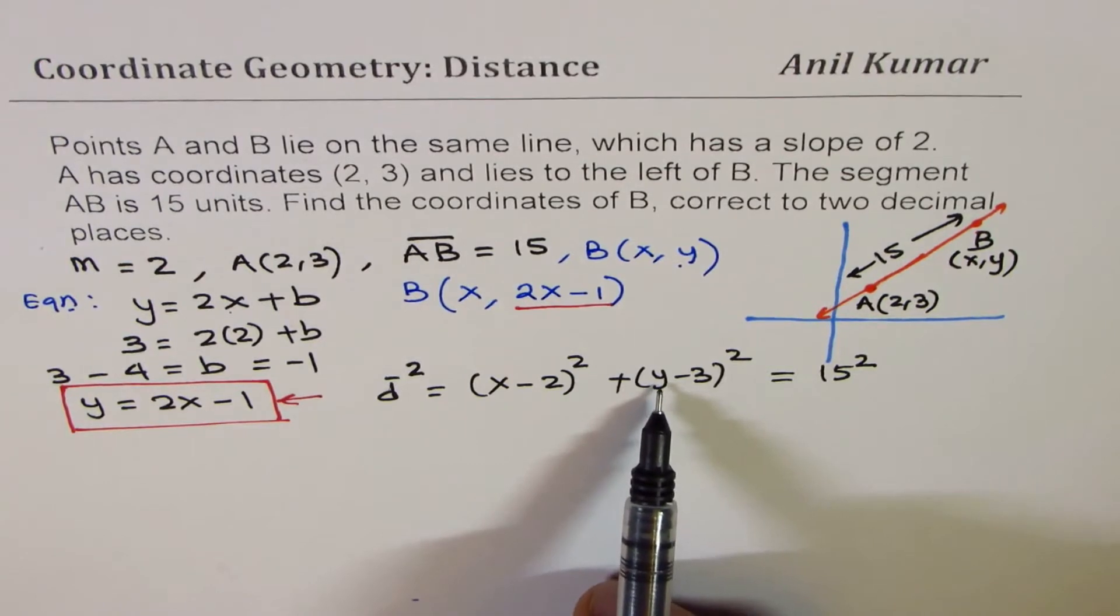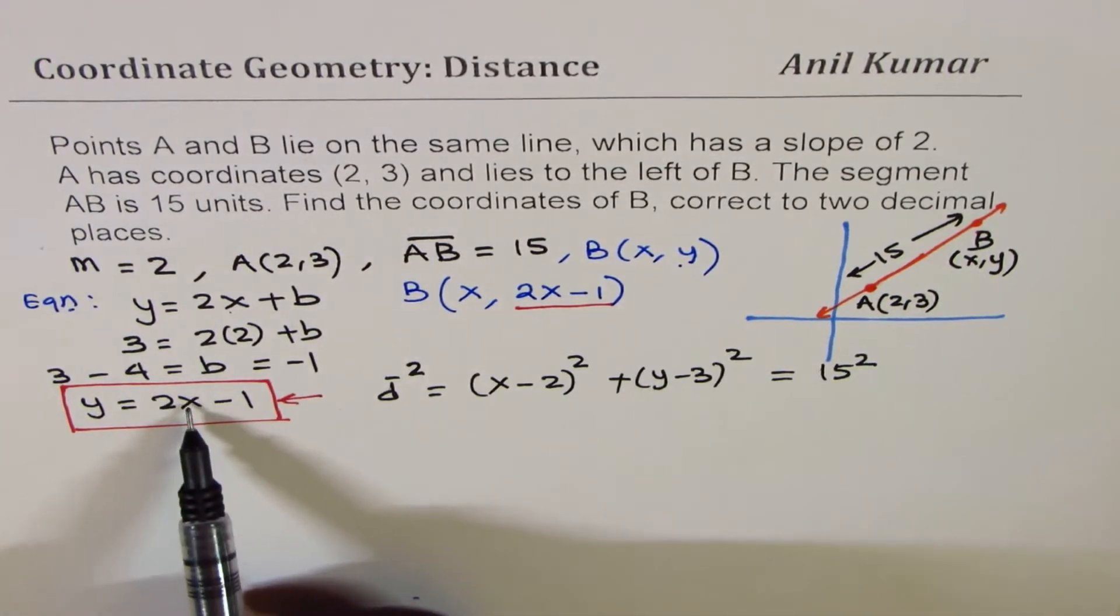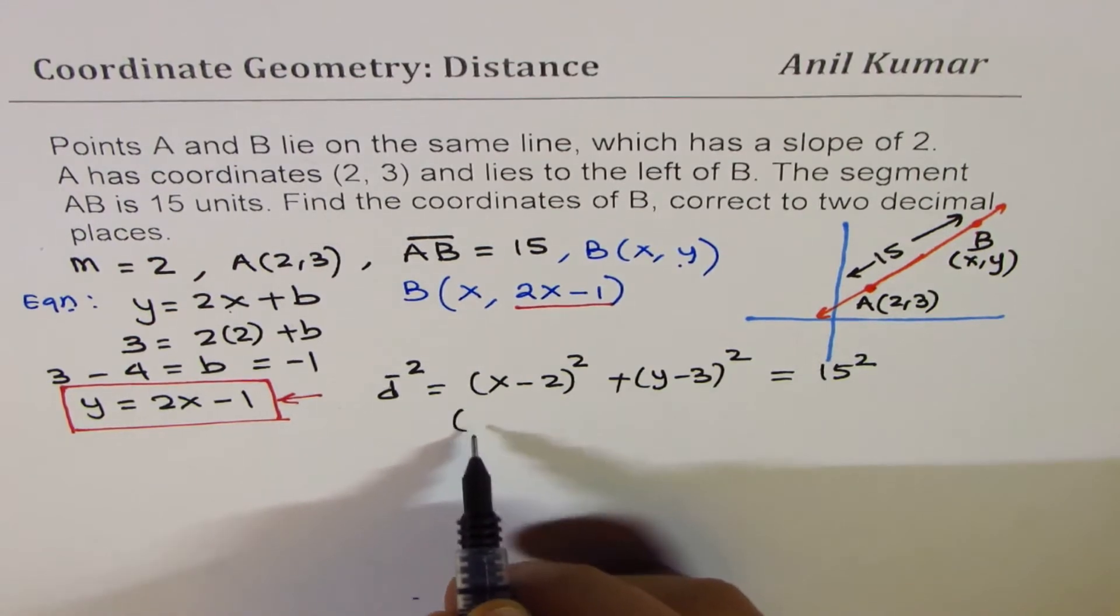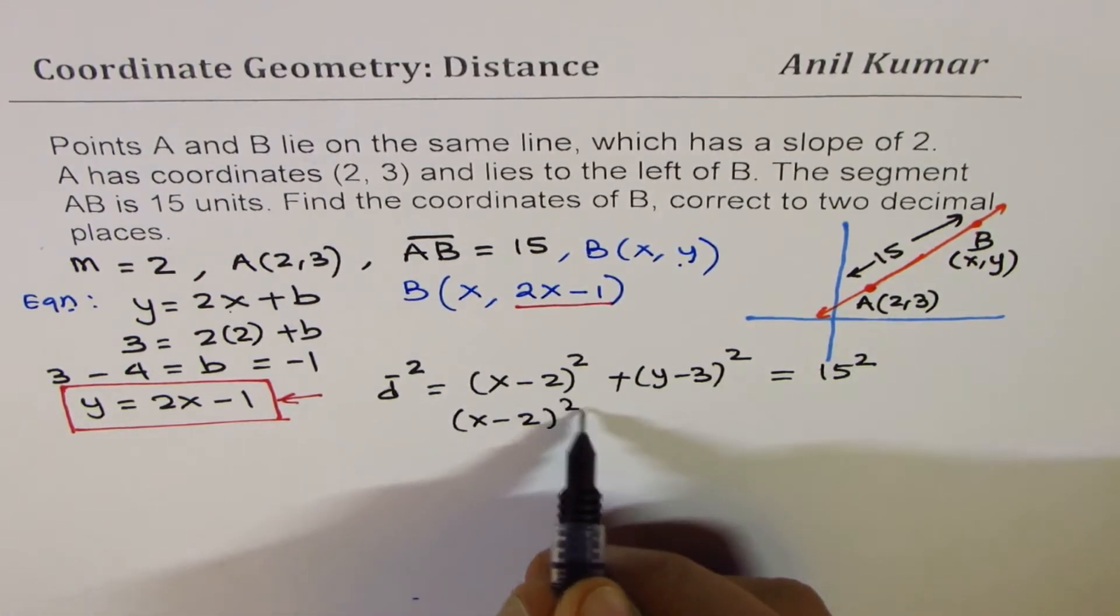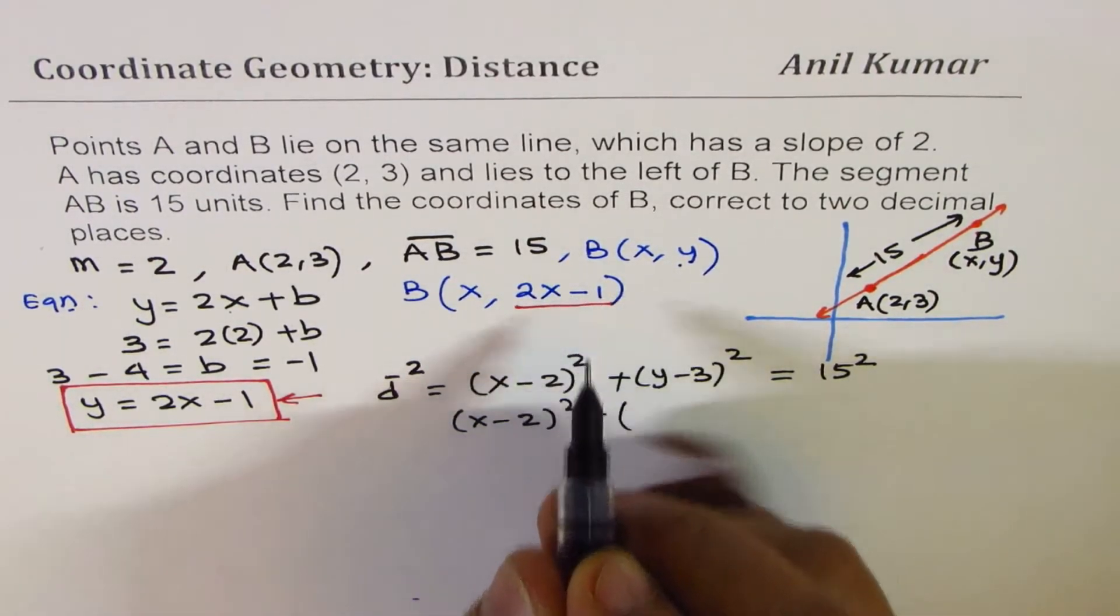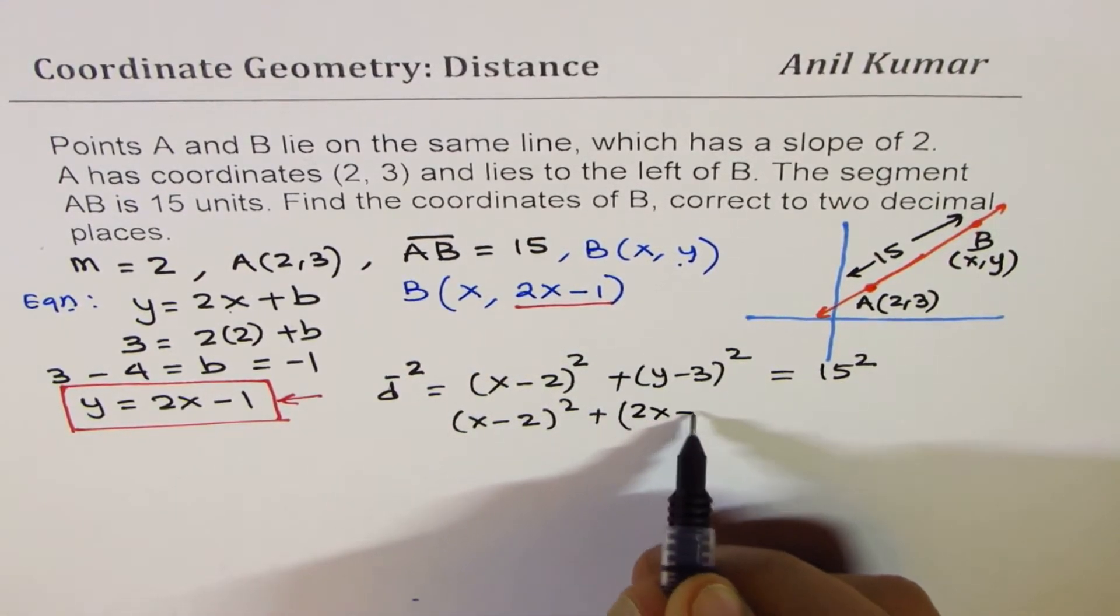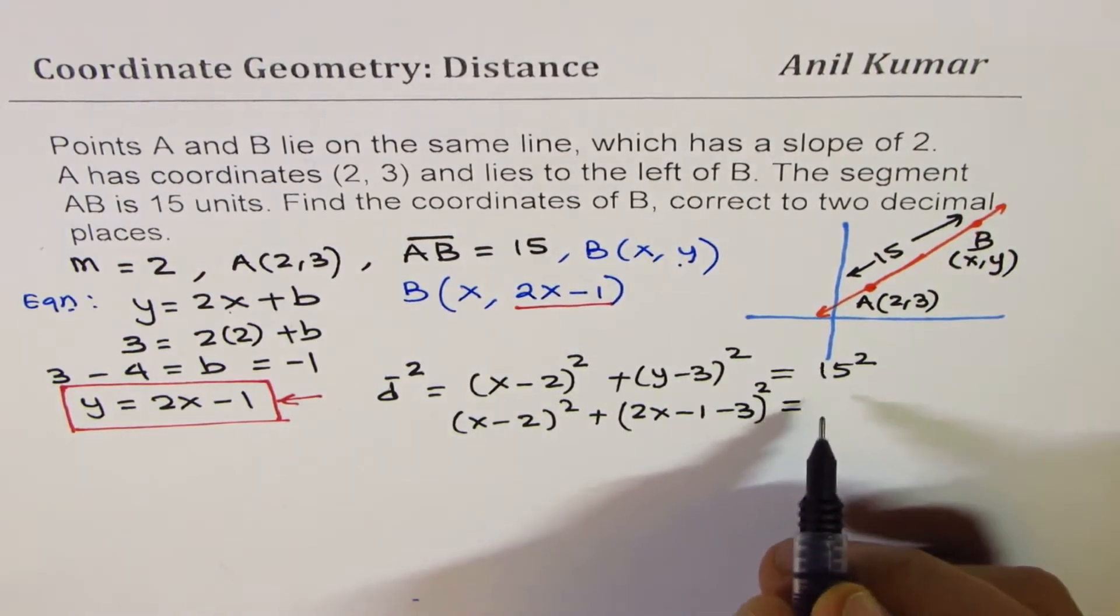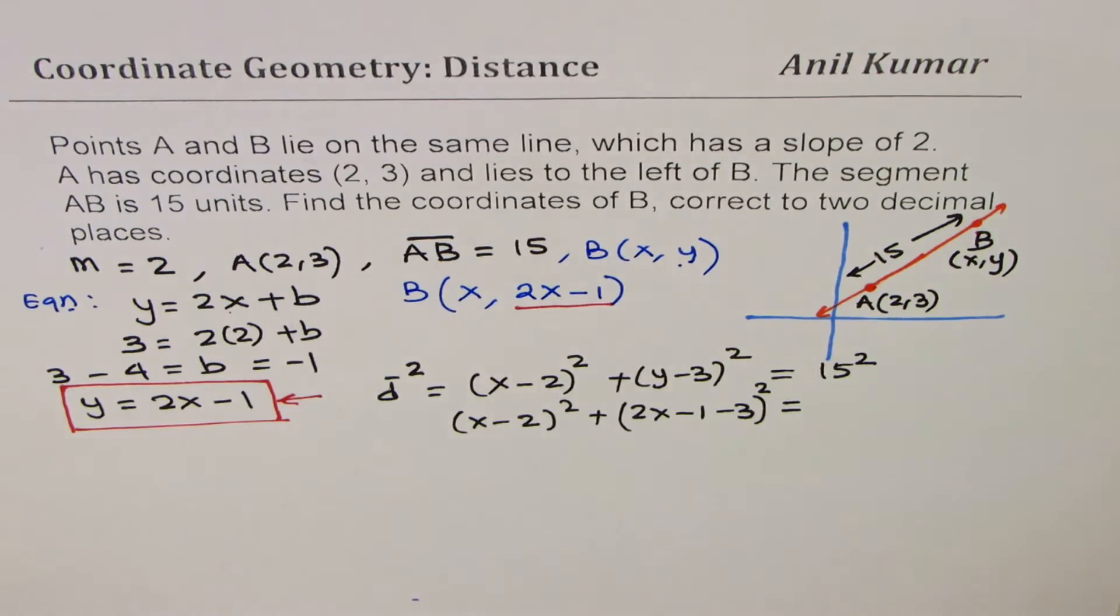Now, the value of y can be replaced by 2x - 1 as we have written here. So, I will write this as (x - 2)² plus, instead of y, I am writing 2x - 1. So, we get (2x - 1) and here we already have - 3 whole square equals 15².